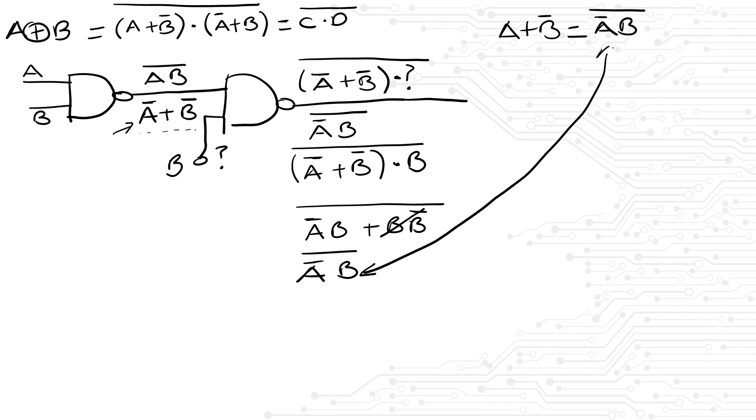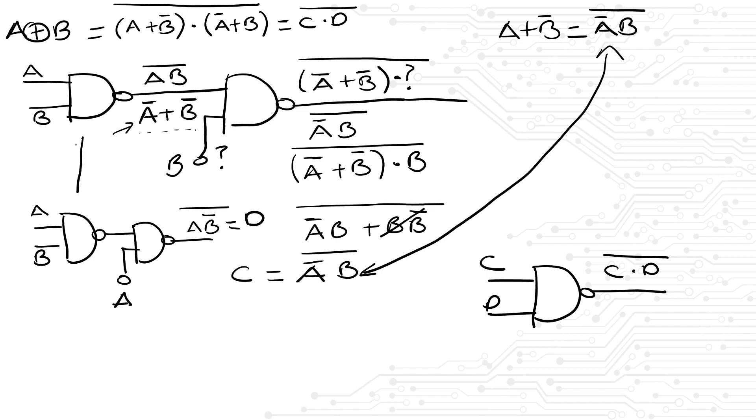This is equal to A + B̅, otherwise known as our C term. We can do something similar for the second term. This time I will just write it, but make sure you understand it. Finally, since we have our terms C and D, and the expression we are after is (CD)̅, we can pass those two terms through another NAND gate. It is rather apparent that these two NAND gates are performing the same operation, so we only need to use one and we can split its output. Hence, the number of NAND gates needed is four and it will look like this.